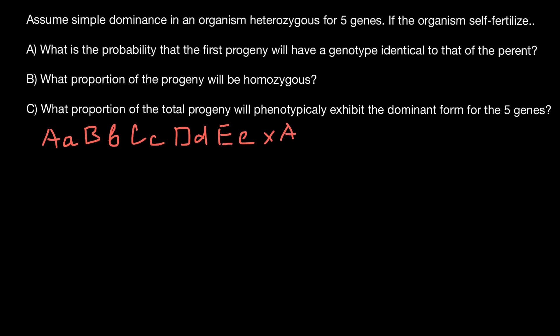So the genotype is: capital A, small a; capital B, small b; capital C, small c; capital D, small d; capital E, small e.